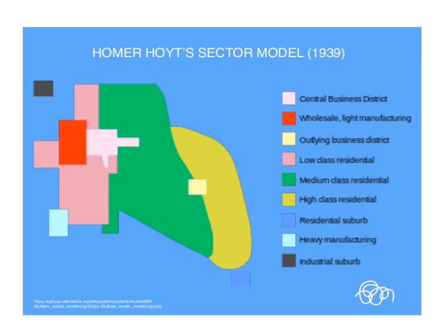The next model is Homer Hoyt's sector model, proposed in the year 1939. It considers the central business district, wholesale light manufacturing, outlying business district, low-class residential, medium-class residential, high-class residential, residential suburb, heavy manufacturing and industrial suburb.